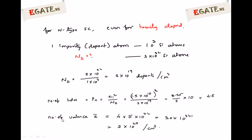For valence electrons: every silicon atom has 4 valence electrons in its outermost orbit. With 5×10²² silicon atoms per centimeter cube and 4 valence electrons each, the total is 4 × 5×10²² = 20×10²² = 2×10²³ valence electrons per centimeter cube — very large compared to the given number. So holes are very small and valence electrons are very large.